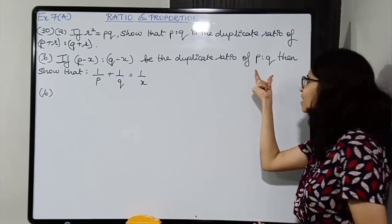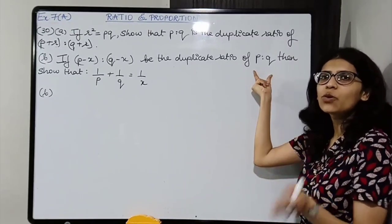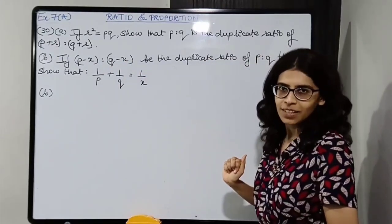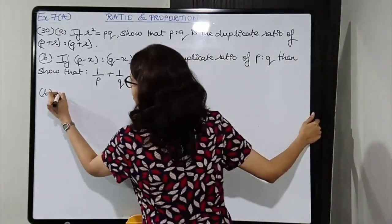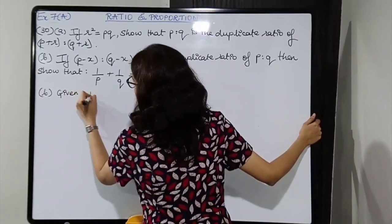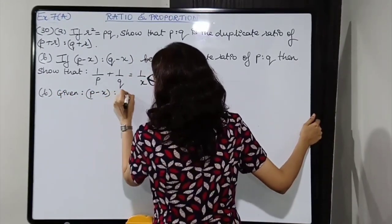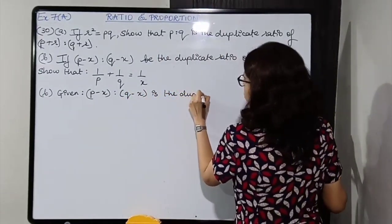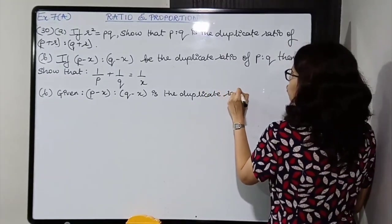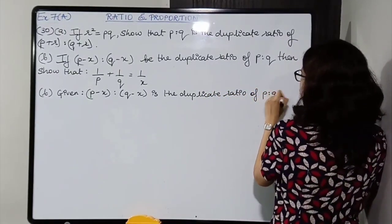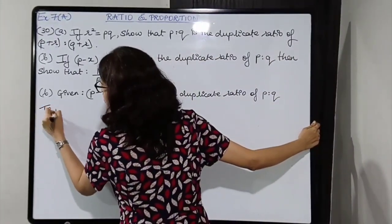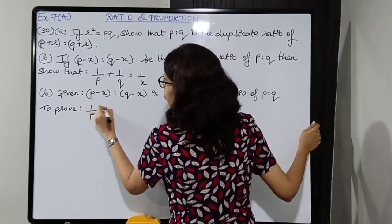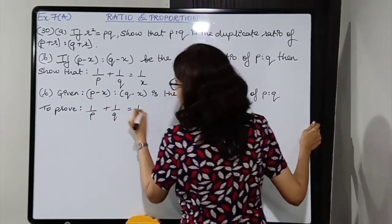Cancel P minus Q from both sides. We are left with X into P plus Q equals PQ. Always look at what you need to prove — we need 1 upon P plus 1 upon Q equals 1 upon X, so we need X in the denominator.